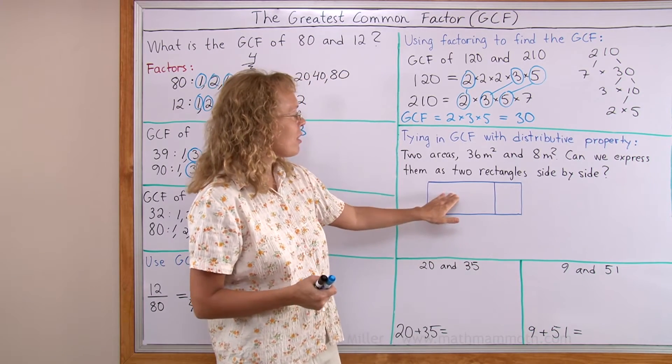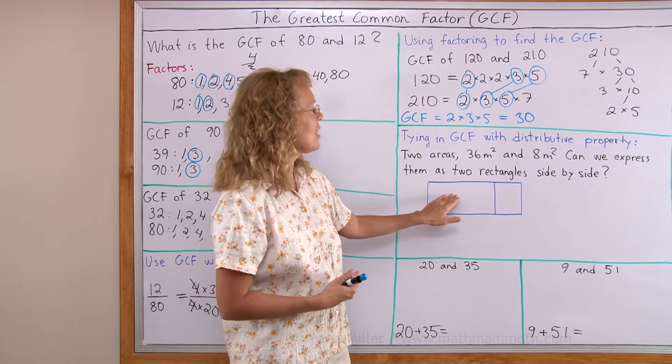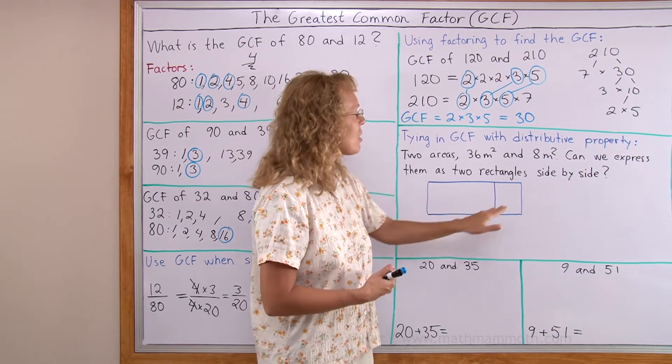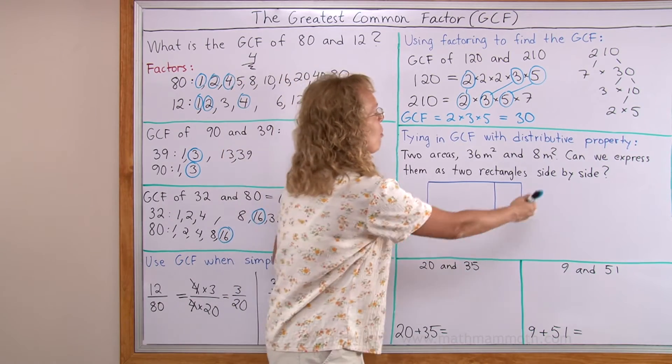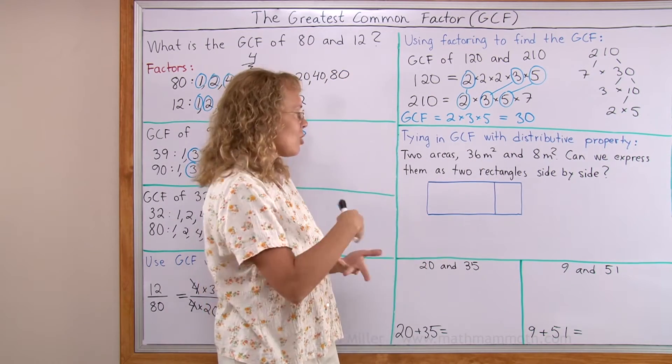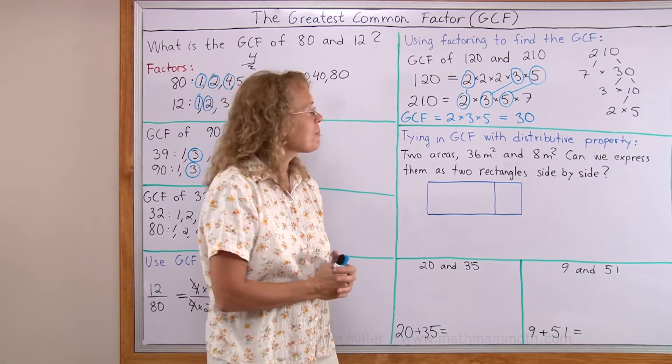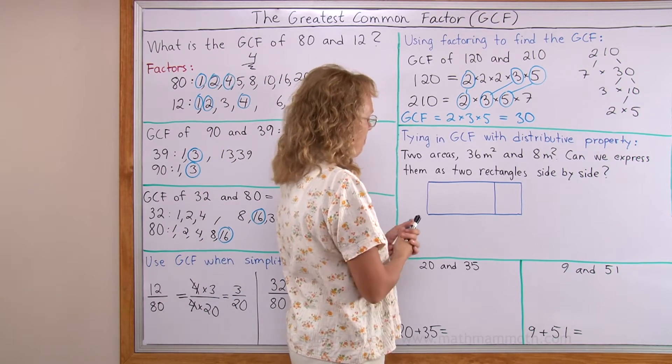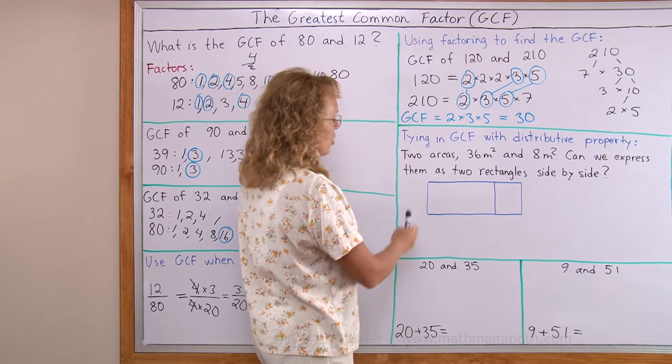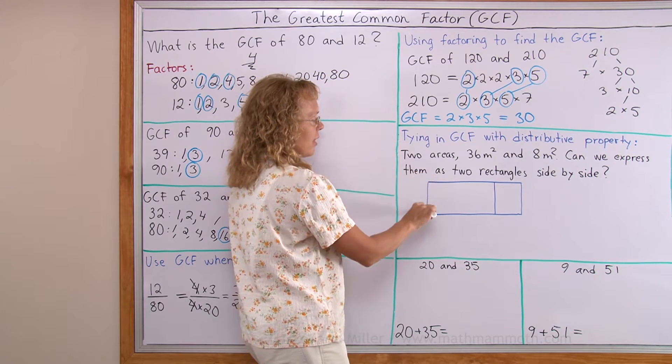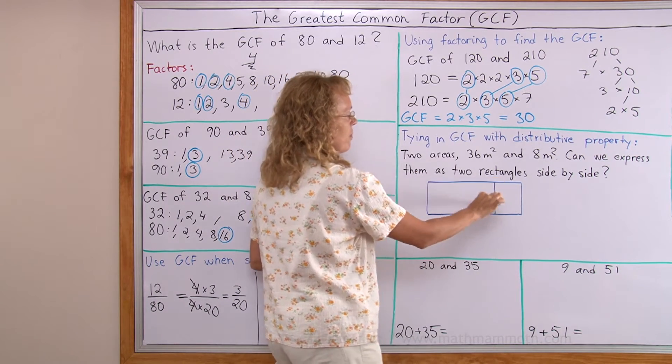This, of course, would be the greater area, 36 square meters and 8 square meters by its side, so that they form a 1 whole rectangle, yet each one of them being a rectangle. And to solve this problem, I need to find here this side length that is common to both of them.